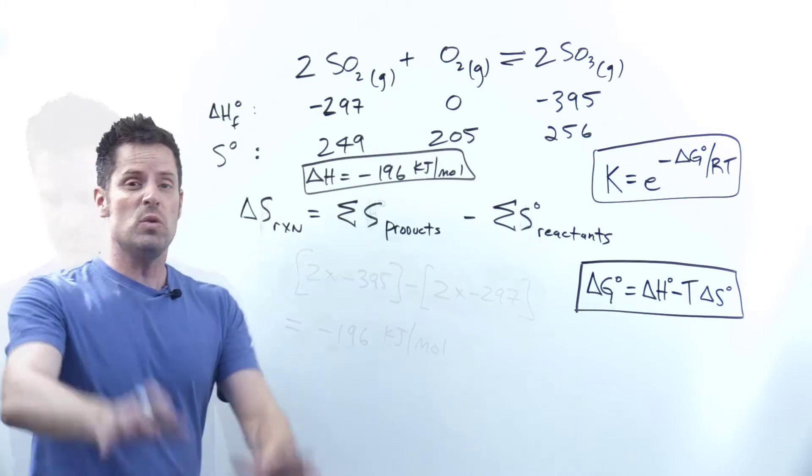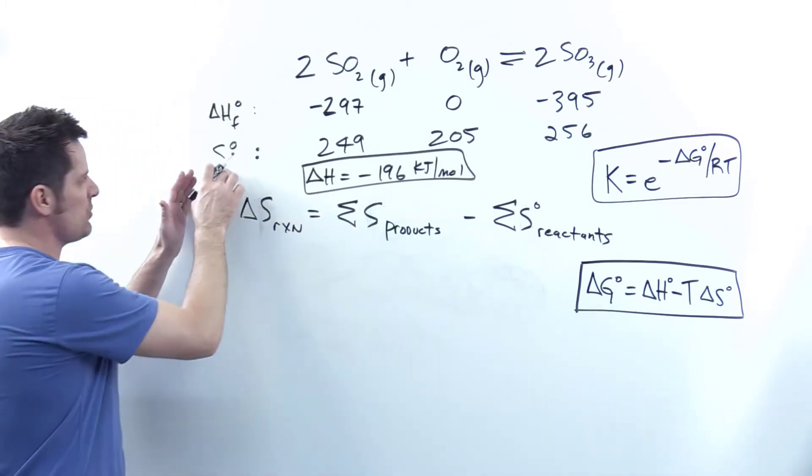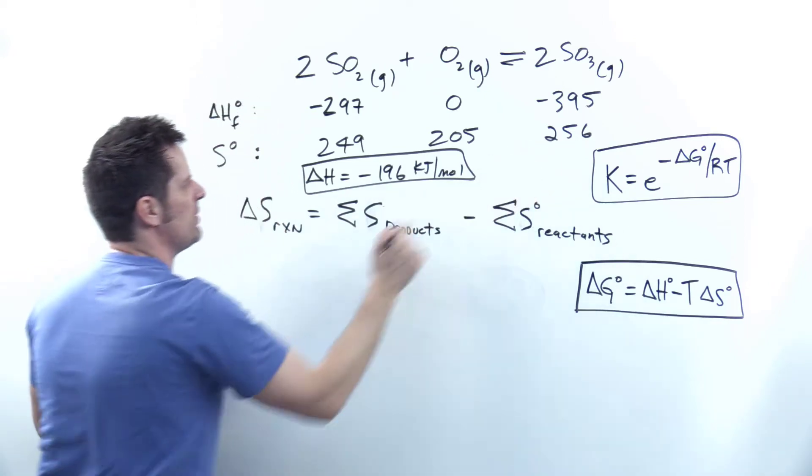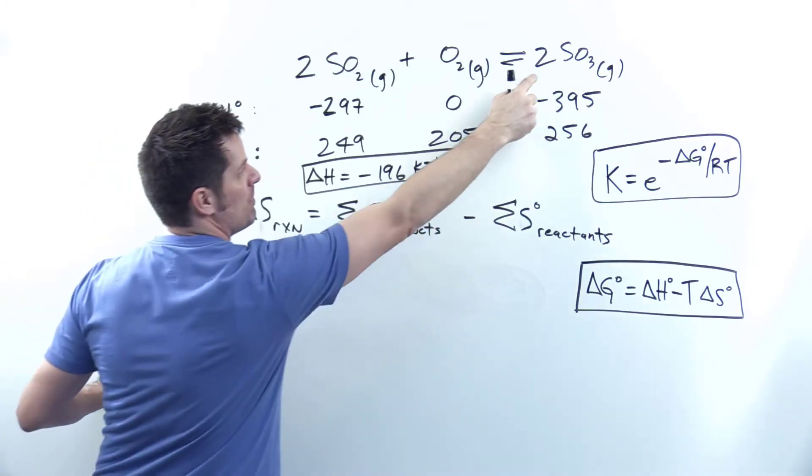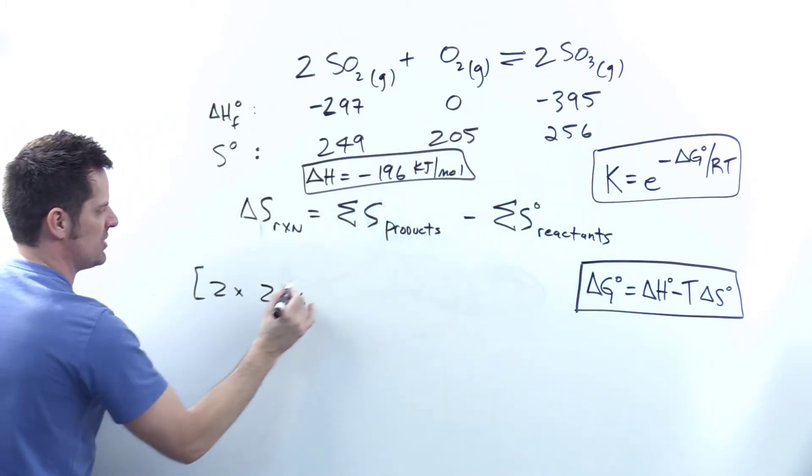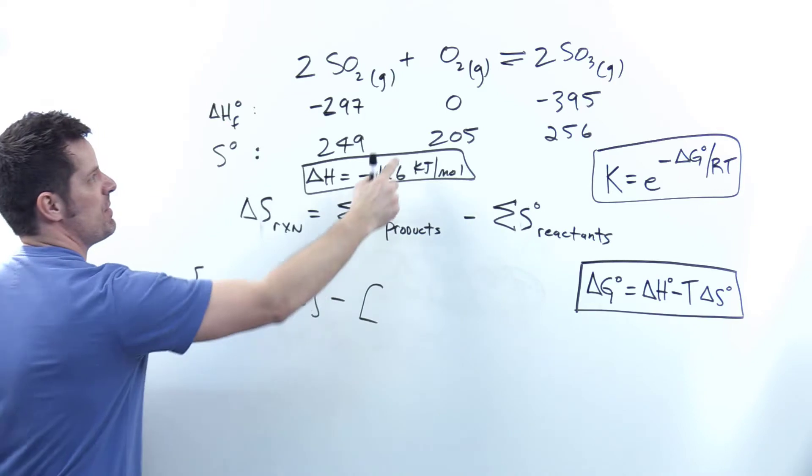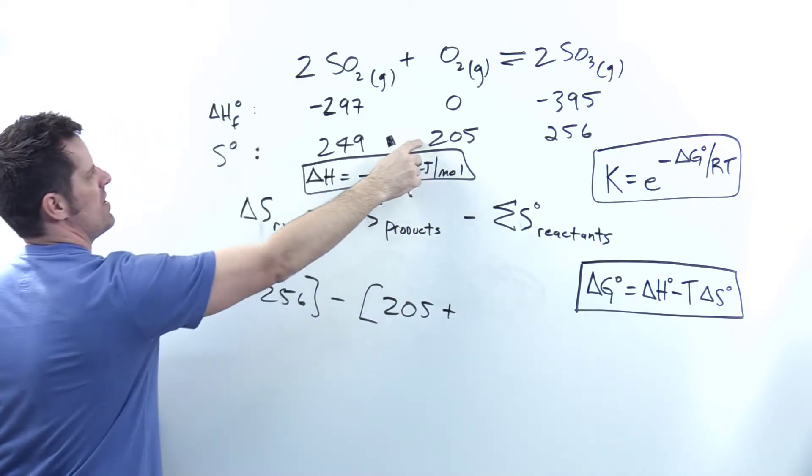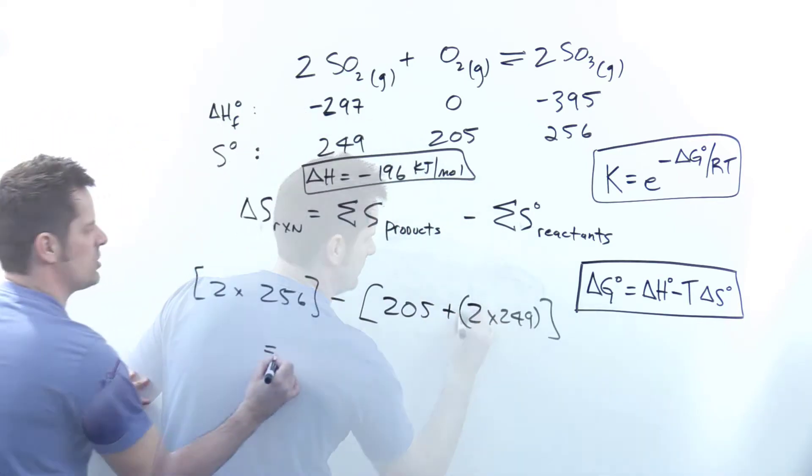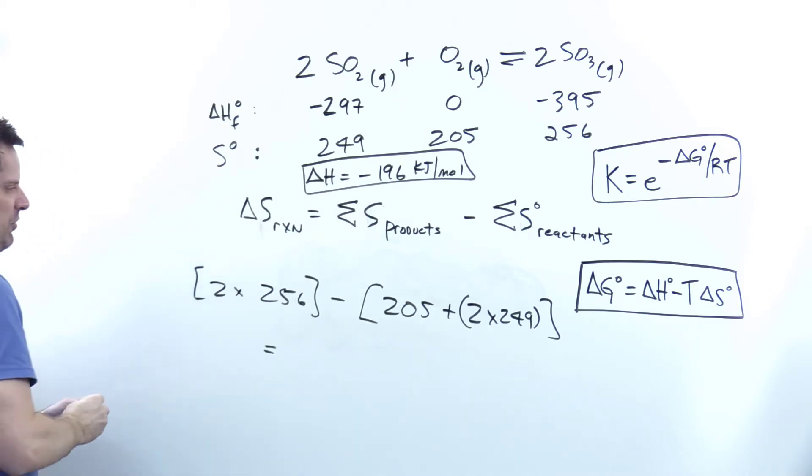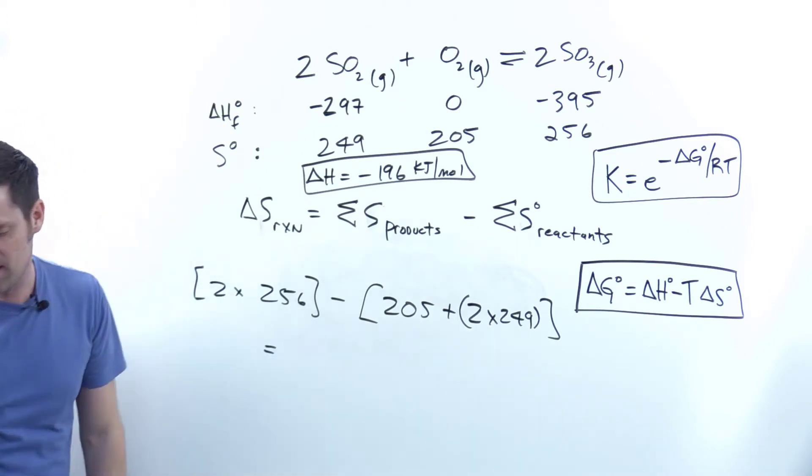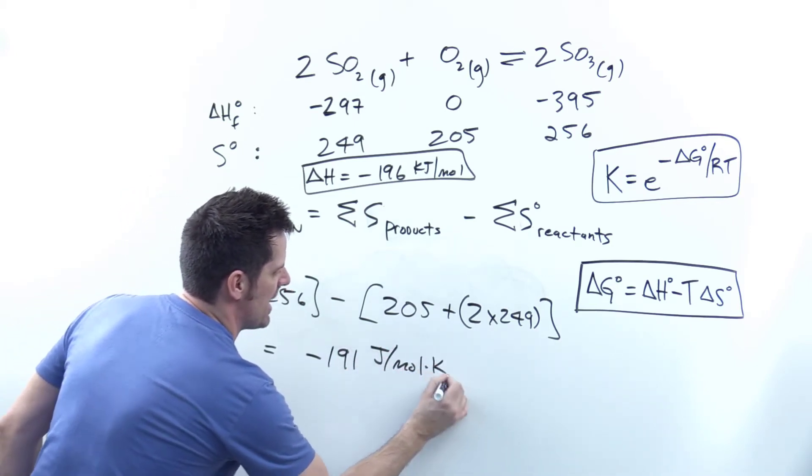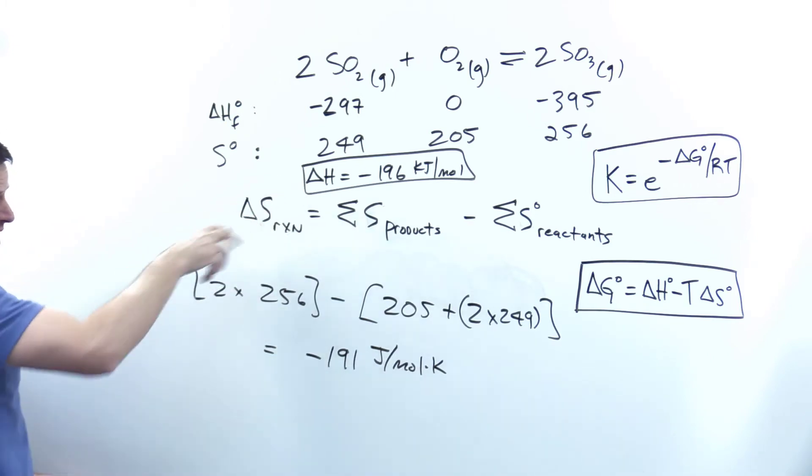Using the analogous process for S values, which have units of joules per mole Kelvin, I take my 256 and multiply by 2. Then I subtract the sum of my reactants: 205 plus 2 times 249. You should end up getting negative 191 joules per mole Kelvin as the answer for delta S.